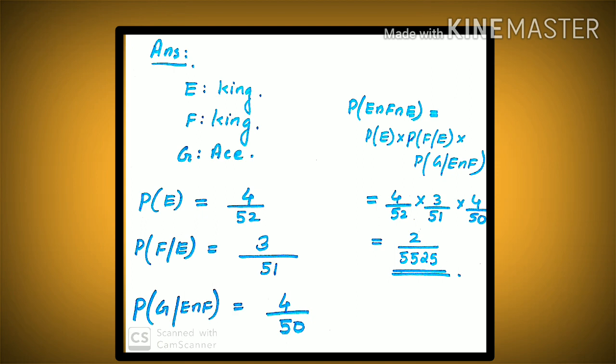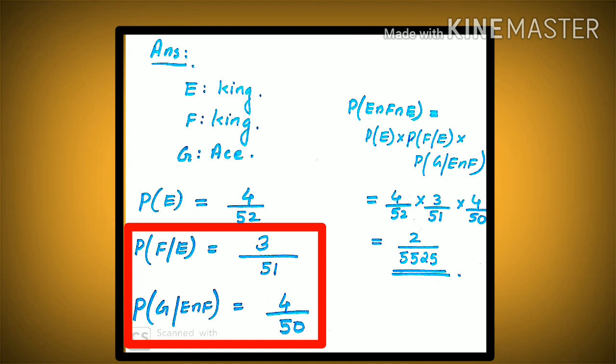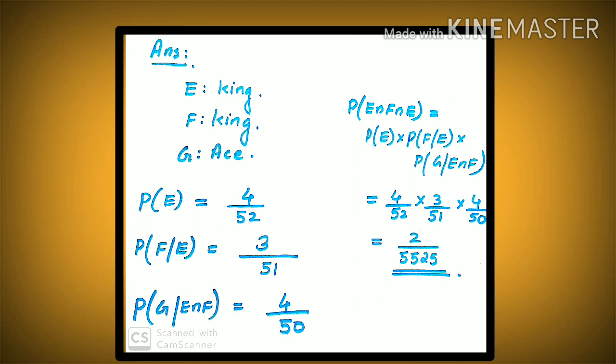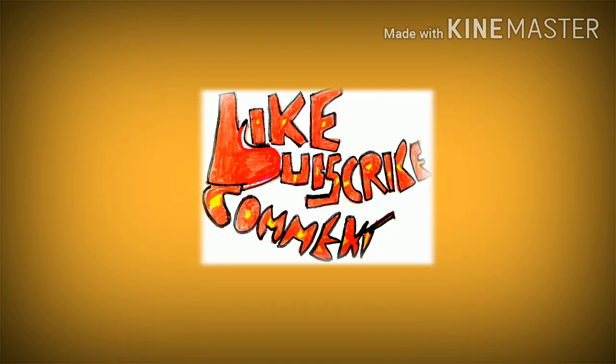We will do the Multiplication Theorem and check the probability. When we are doing the same thing, we can do an action at the same time. I've seen P of F given E, or P of G given E intersect F — do not get confused. I will not cover all of this in this video, so please like, subscribe, and comment. Okay, Tata from Epi Splash.